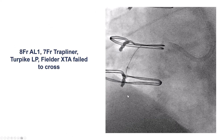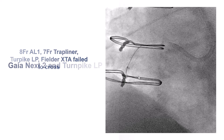Our plan was to try antegrade wiring first, and then if it didn't work, try to go retrograde through the occluded saphenous vein graft. We used a large eight French AL1 guide with a guide extension, and then we used a Turnpike microcatheter filled with XTA, which did not work.